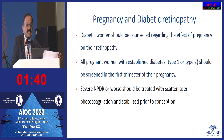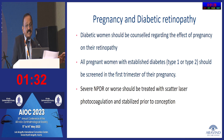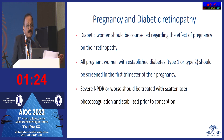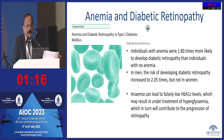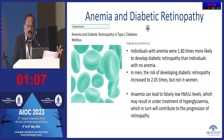It is important that diabetic women are counseled about the effect of pregnancy on retinopathy. Those with advanced diabetic changes such as sight-threatening or severe PDR should be treated first before conception. They should be examined very closely in their first trimester. Anemia is another important factor — it can worsen diabetic retinopathy and can also falsely lower HbA1c levels, so hemoglobin levels must be checked before interpreting HbA1c for assessment.